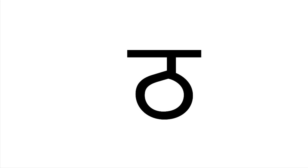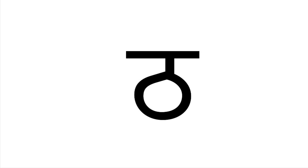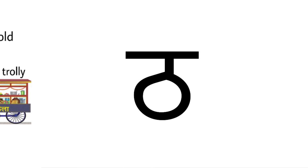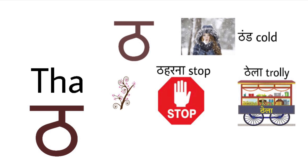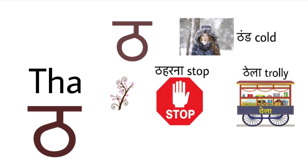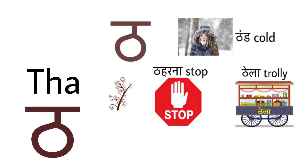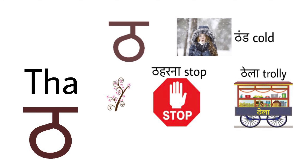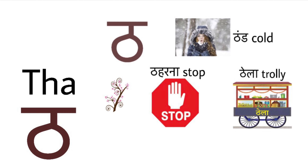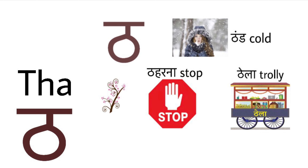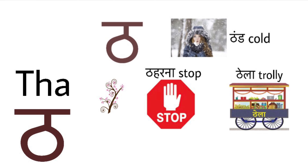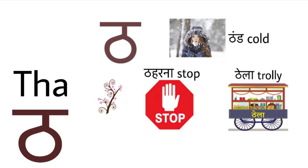We have our Hindi alphabet THA. Let us revise once again: THA for THAN means COLD, THA for THERNA means STOP, and THA for THELA means TROLI.